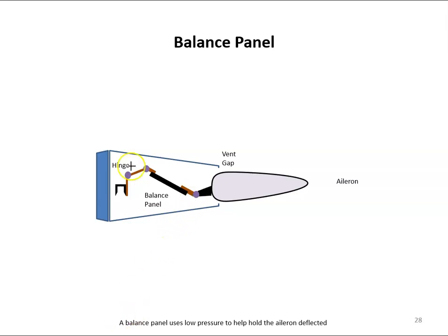So this is a balance panel, and let's assume that this is the wing there. That's the wing, and this here is the aileron.